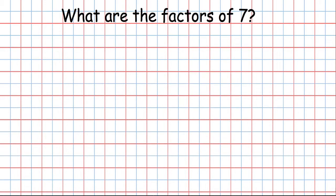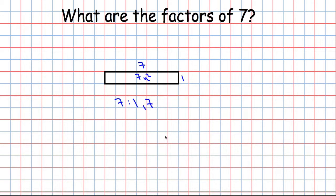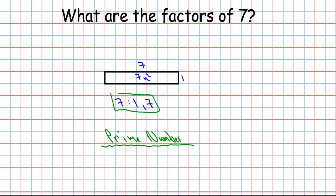Okay, just one more example, and this is a very special one: the factors of 7. With a little bit of thought, you'll discover that 7 can only be drawn as a rectangle in one way — when one side is 7 and the other side is 1, giving 7 units squared. So the only factors of 7 are 1 and itself. This is what we call a prime number — any number that has exactly two factors is a prime number.